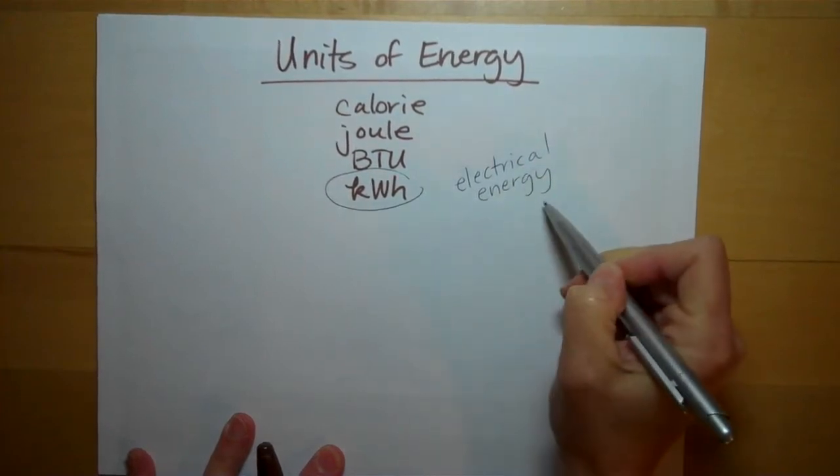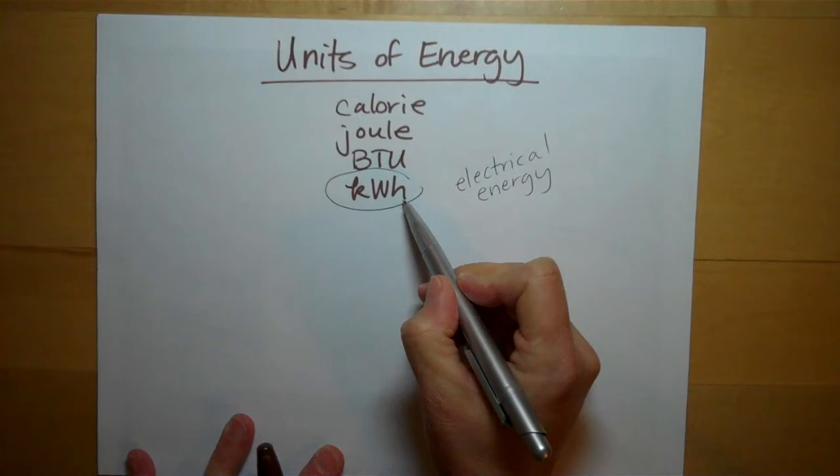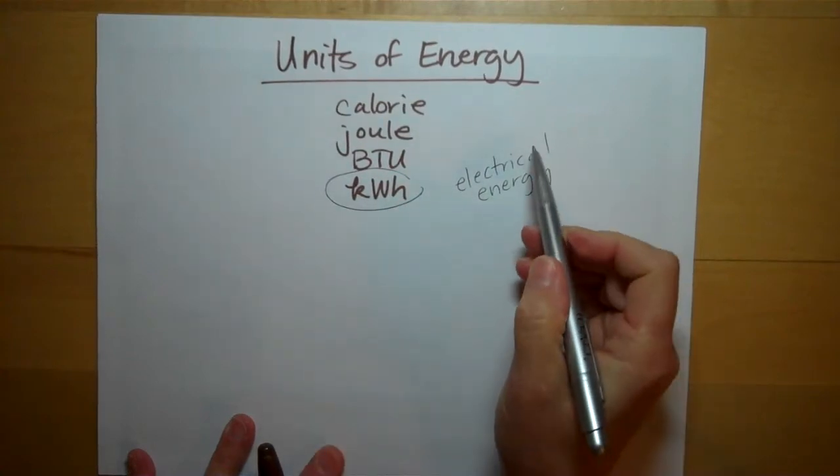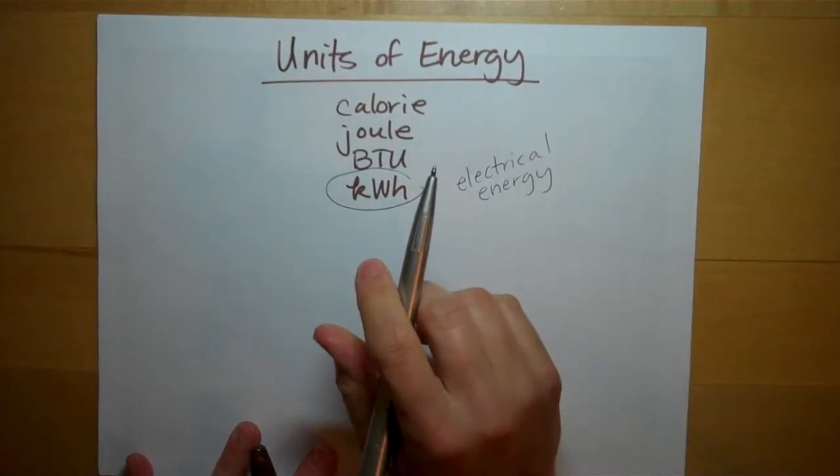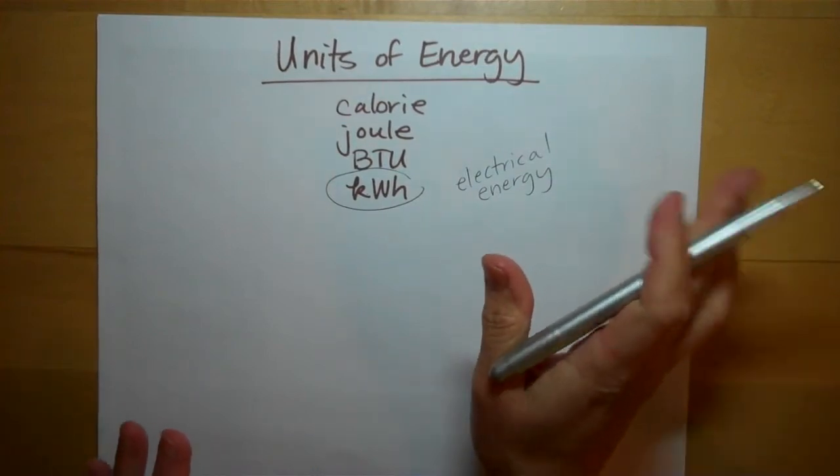So electrical energy is usually measured in kilowatt hours. And it doesn't matter where you get your electrical energy from, whether you get it on your own, off the grid, through solar or geothermal or wind.